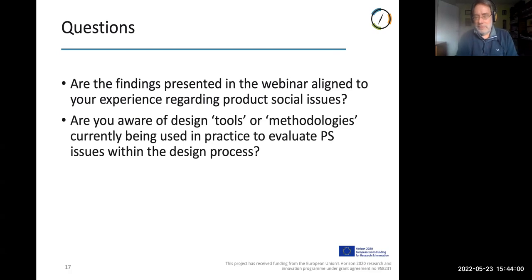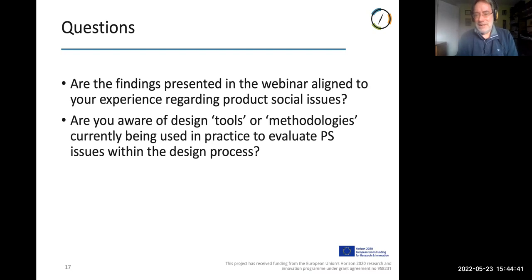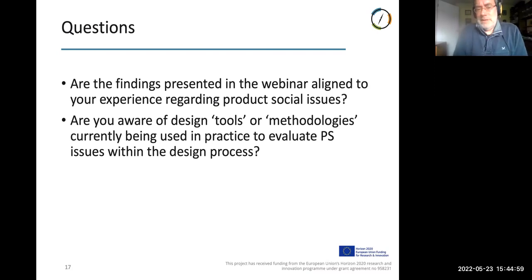Unless anybody has any further comments, we can draw to an end. It's clearly a new issue with not much written on it in the literature. My gut feel is there are a lot of social issues that are actually being dealt with in design and development, but they're not being thought of as social issues — which is quite an interesting issue about language and interpretation. The design and development people were able to identify all sorts of social issues, but then say it's supply chain, it's CSR, it's not us. There are interesting gaps in knowledge to address across various projects.